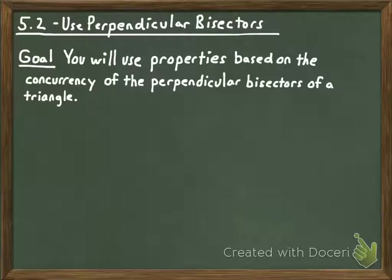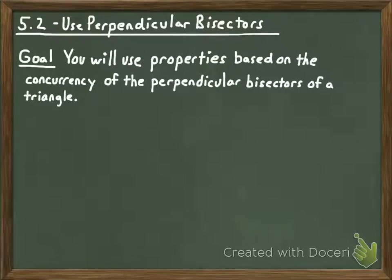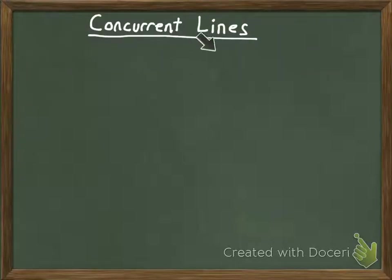There are some definitions we're going to need to talk about. You don't know what concurrency means quite yet. You've not looked at a triangle and all of its perpendicular bisectors before — you've only looked at perpendicular bisectors of a single segment. I want to start off with the definition of what concurrency is, or what concurrent lines are. When we're talking about concurrent lines, what we're referring to is when three lines or more intersect in a certain way.